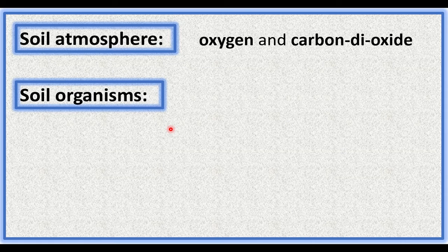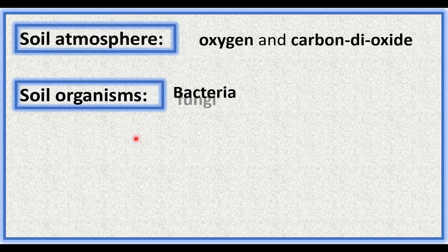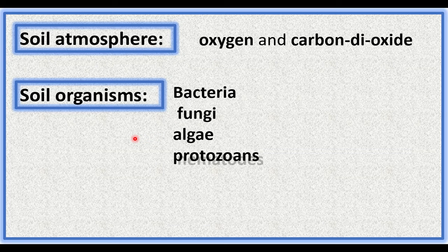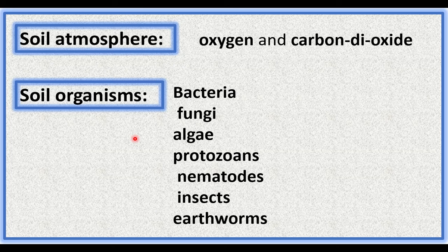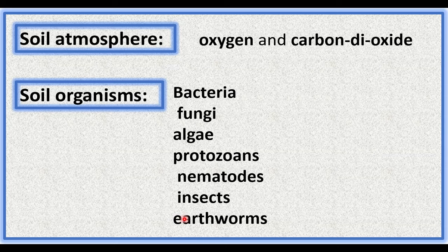Soil organisms play an important role in maintaining soil fertility. Bacteria, fungi, algae, protozoans, nematodes, insects, and earthworms are various soil organisms. Bacteria and fungi are decomposers. Blue-green algae add nitrogen to the soil. Earthworms add humus to the soil.